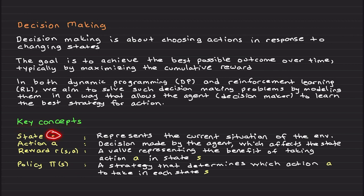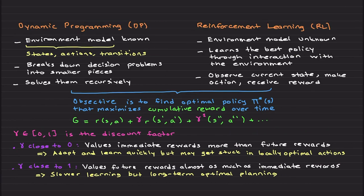Here we have a state S, which represents the current situation of the environment — you can think of the current position of a robot. Action A is the decision made by the agent; think of a robot on a two-by-two grid environment choosing up, down, left, or right — a decision that affects the state. If you apply left, the robot goes left, so it affects the state. There is also a reward — a value representing the benefit of taking an action in a particular state. And we have policy pi, which is a strategy that determines which action A to take in each state S.